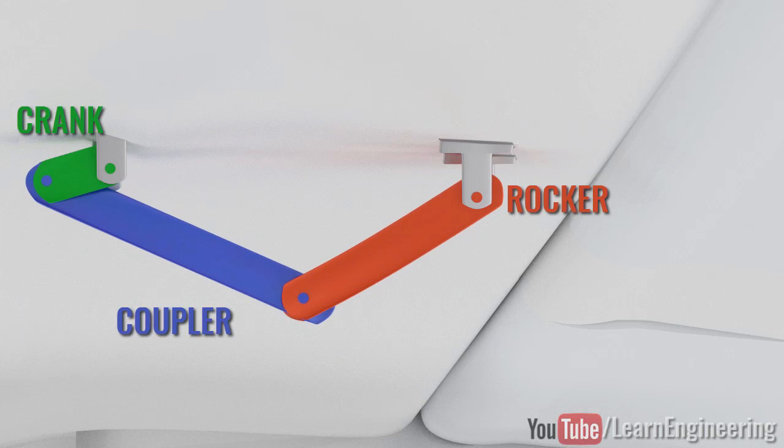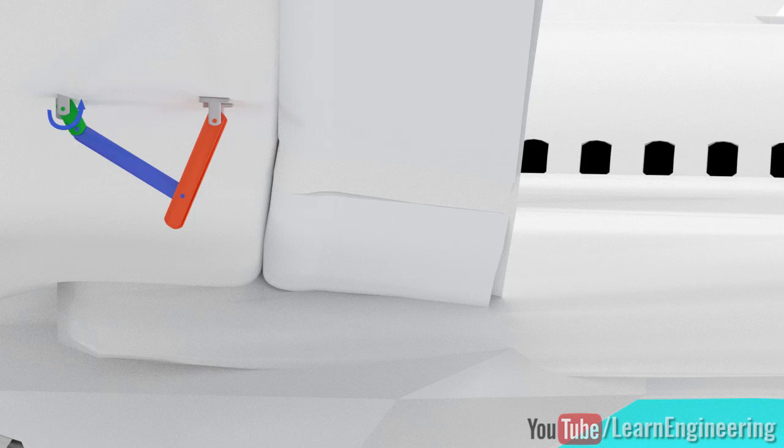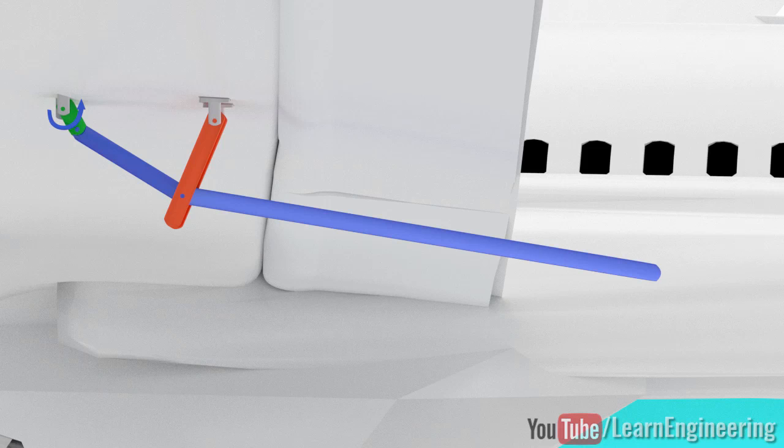Let's modify this mechanism to achieve the desired motion. First, the length of the rocker arm is increased. The length of the coupler is also increased. One more link is connected to the end of the rocker arm. A final limb is connected between these arms.